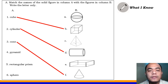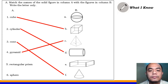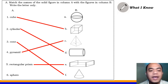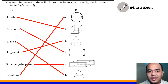Very good! Pyramid. Saan dyan ang pyramid? Yes! Letter C. Number 5, rectangular prism. Correct! Letter E. And number 6, sphere. Saan dyan ang sphere? Sphere is letter A.